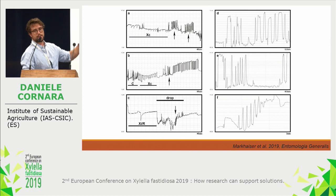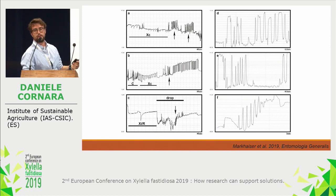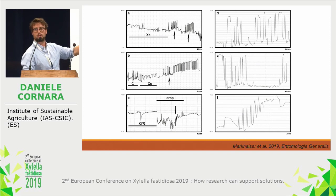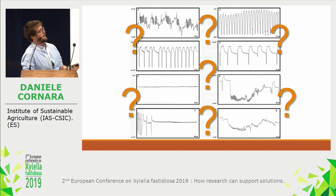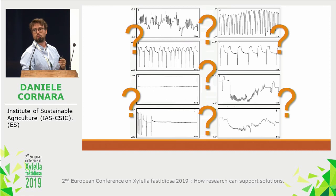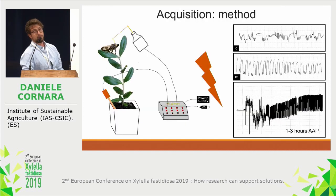Other researchers associated this spikelet burst behavior with a very quick movement of the precibarium valve. This is a rare behavior compared to the six stereotypically repeated behaviors done in most probes. But which behavior is associated with acquisition of Xylella cells, and which with inoculation?